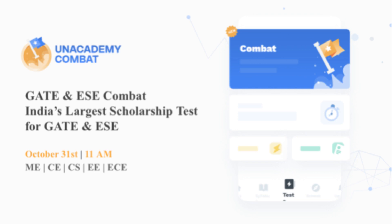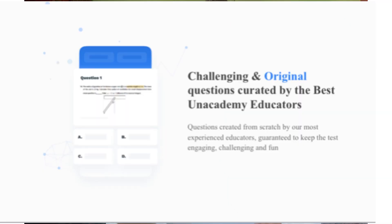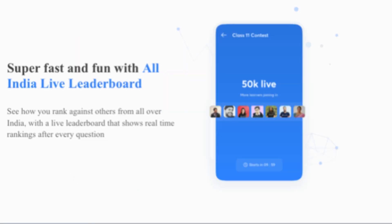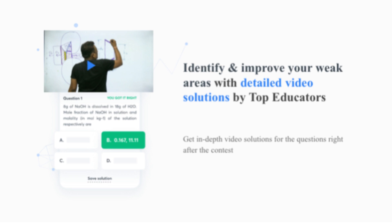If you are preparing for GATE and EAC, Anacademy has a Combat Scholarship Test coming up that you can fill. You will get a good scholarship regardless of whether you are from ME, EC, SE, NE, or AC. By scoring good marks, you can get a scholarship to help your GATE and EAC preparation. The examination date is October 31st at 11 a.m.